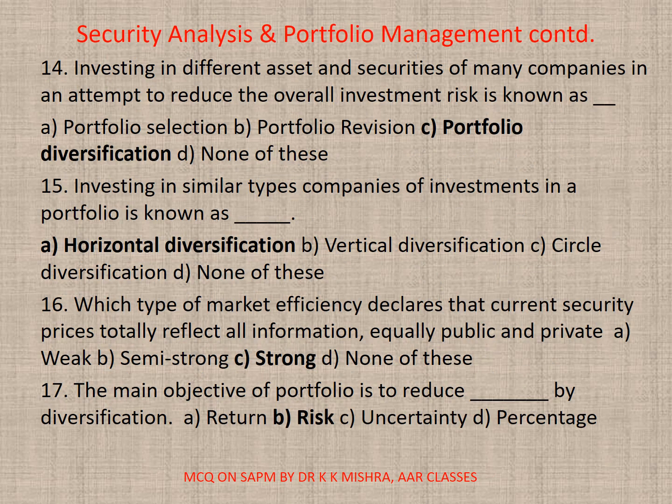Question 14: Investing in different assets and securities of many companies in an attempt to reduce the overall investment risk is known as — correct option is C — portfolio diversification. Question 15: Investing in similar types of companies or investments in a portfolio is known as — correct option is A — horizontal diversification.